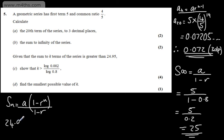So what we can say now, this is going to be greater than 24.95. So 24.95 will be less than the first term, which is 5, multiplied by 1 minus the ratio, 0.8 to the power of k, over 1 minus 0.8.